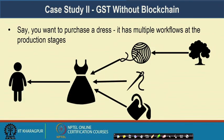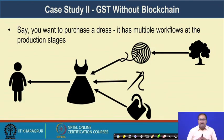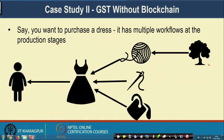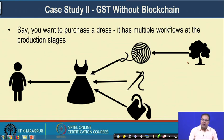Let us start with an example: say you want to purchase a dress. Whenever you want to purchase a dress it has multiple workflows at various stages of production. Initially the farmer needs to produce the cotton. Once the cotton has been produced, it comes from one vendor, then you require other raw materials for producing a dress like needles, the sewing machine, the colors — all these different stages. The production house produces the dresses and the dresses go to some shopping center or mall from where you purchase the dress.